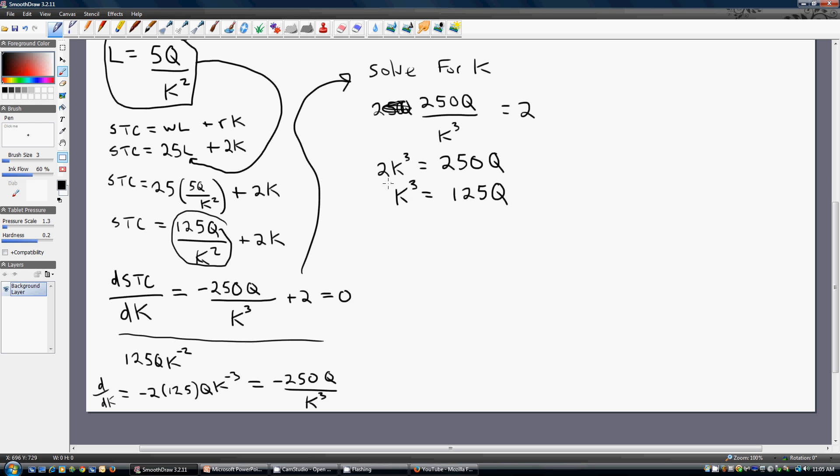Next step is to get rid of that K to the third power. We're going to raise both sides of the equation to one-third. So this left-hand side will simplify down to K now. The right-hand side, we're going to get 5 times Q to the one-third power. So this is a result upon simplifying the derivative of the short-run total cost equation with respect to capital.